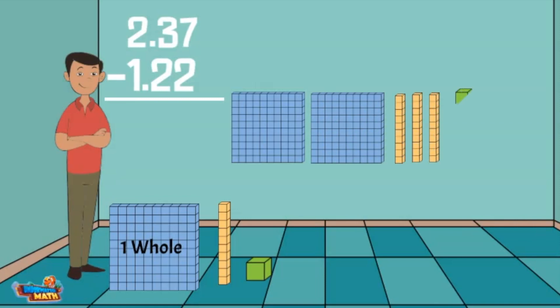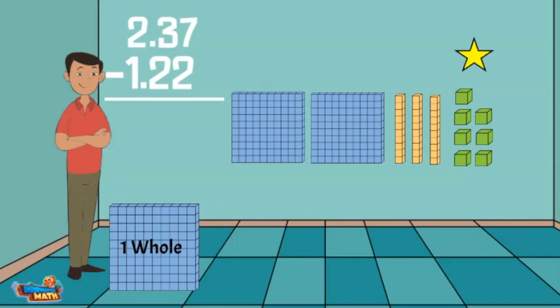I need to take away one and twenty-two hundredths. I start with the cubes, our hundredths. I need to take away two. In the tenths place I also need to take away two.